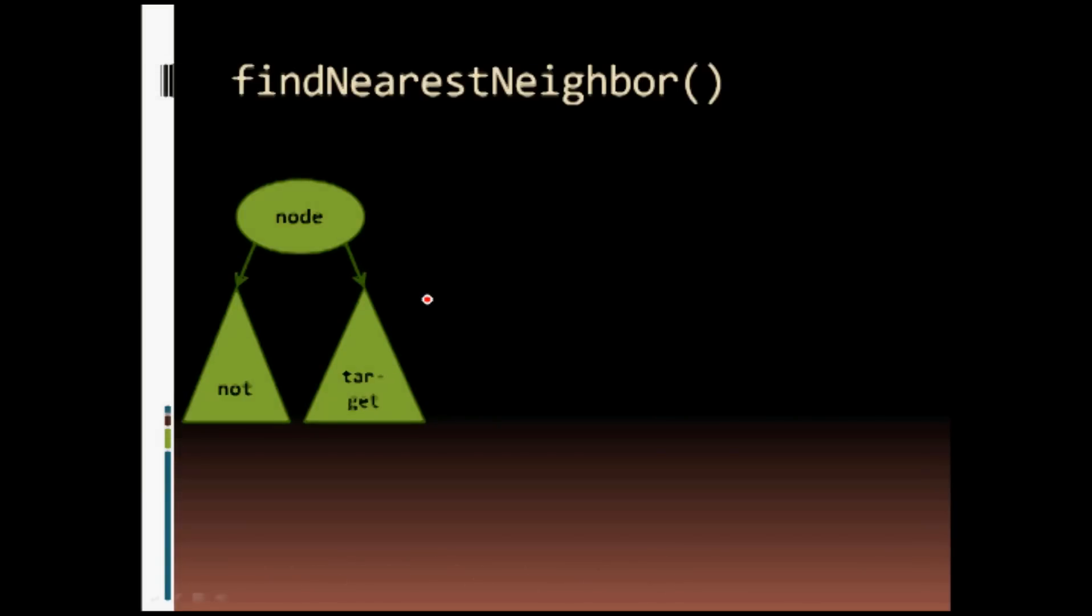Basically, this recursive function, the recursive helper for find nearest neighbor, will do three things.